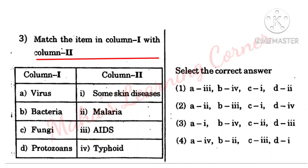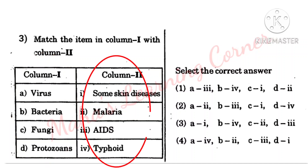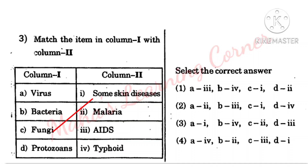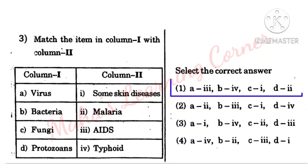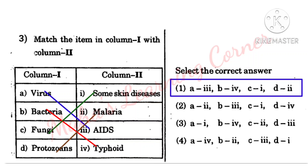Column matching question: Column 1 lists organisms, Column 2 lists associated diseases. Fungi — some skin diseases; Protozoans — malaria. Correct answer is Option 1: A3, B4, C1, D2.